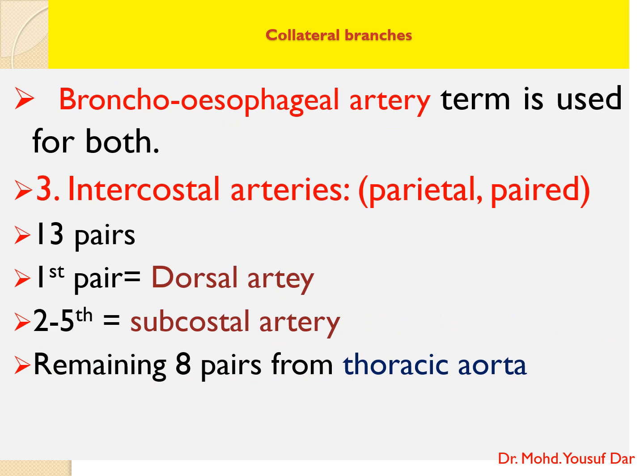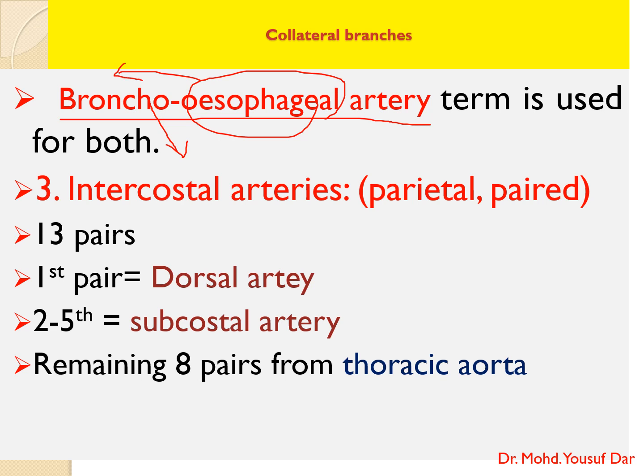Sometimes a common term, bronchoesophageal artery, is used for both the bronchial and esophageal arteries, because the bronchial artery gives a branch to the esophagus, and the esophageal artery gives a branch that supplies the lungs.